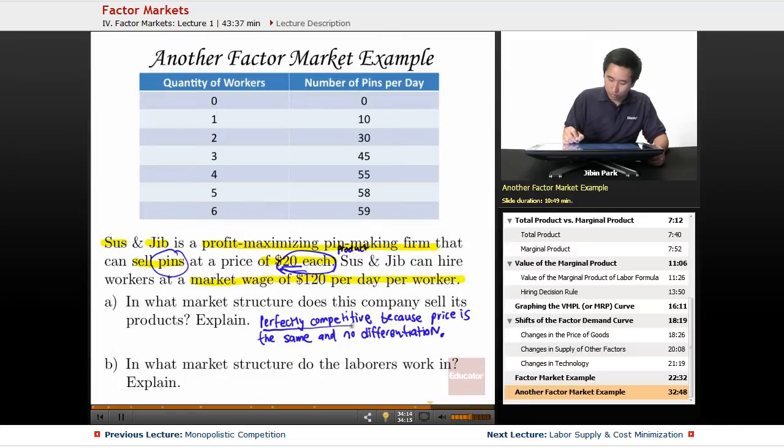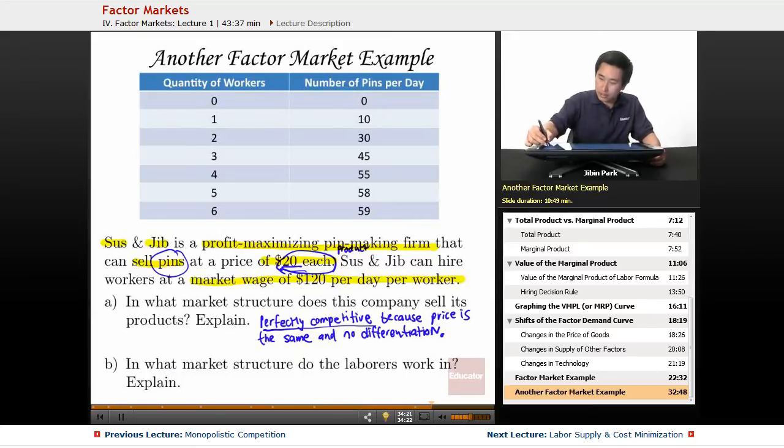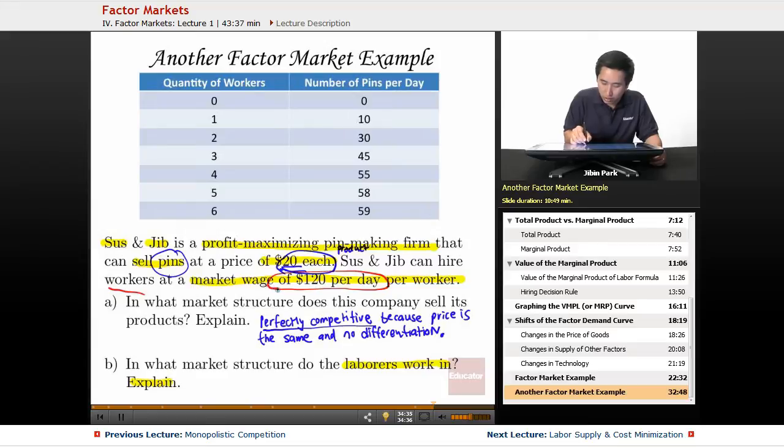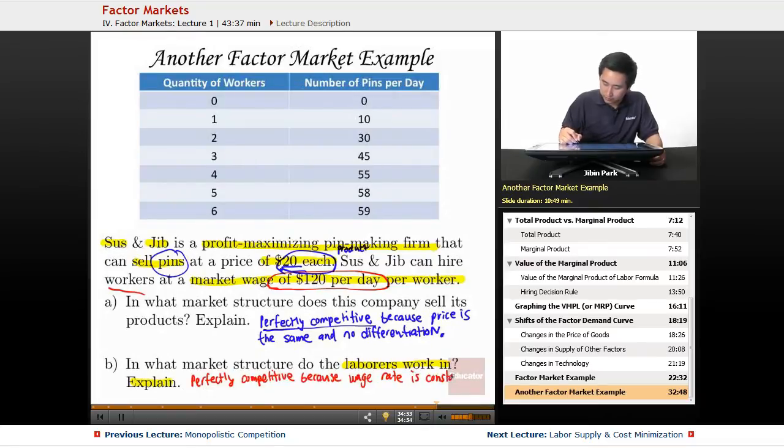Part B is asking: in what market structure do laborers work? Go back to the prompt—it says Susan Jib can hire workers at the market wage rate of $120 per worker. All workers are paid $120, so this is perfectly competitive because the wage rate is constant. You have two different markets, and they both happen to be perfectly competitive. You have to understand which is a factor market and which is a product market.